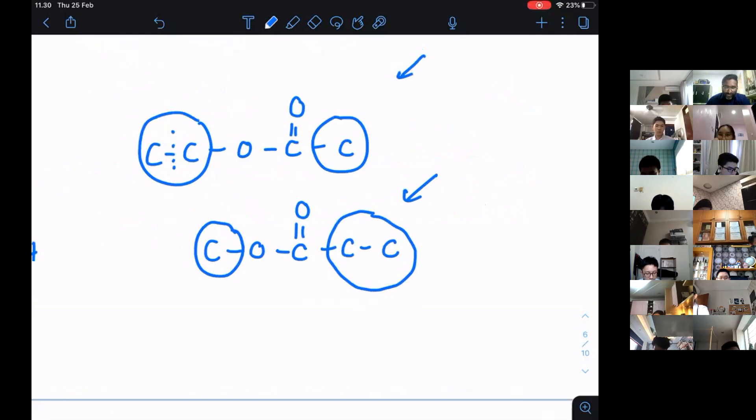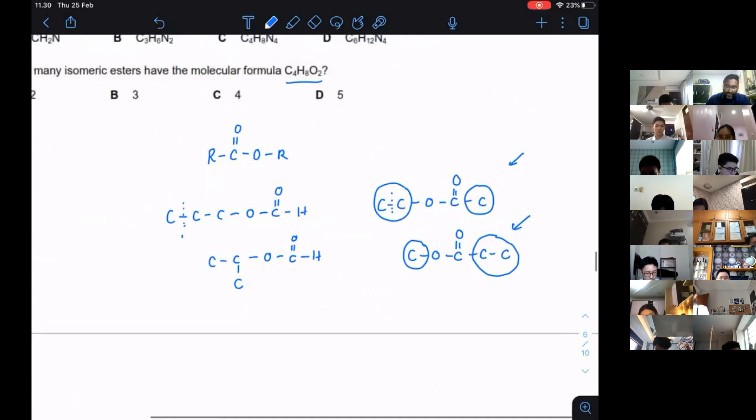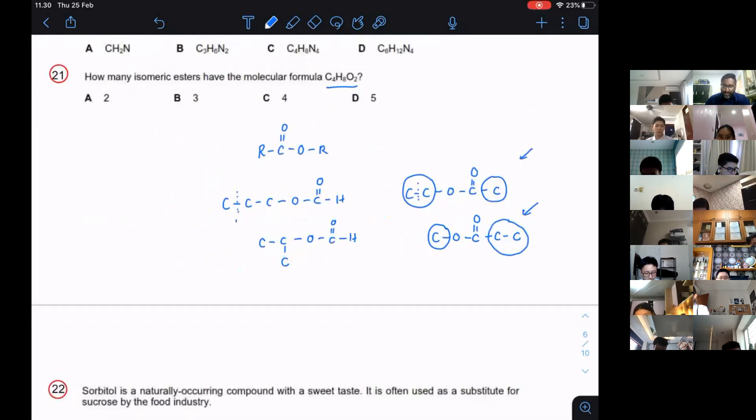They are different. So to answer this question, how many isomeric esters have the molecular formula of C4H8O2, the answer will be: you have one, you have two, you have three, and you have four. There is no other way or other combination that you can have this. Therefore, the answer will be C4. So I will stop.